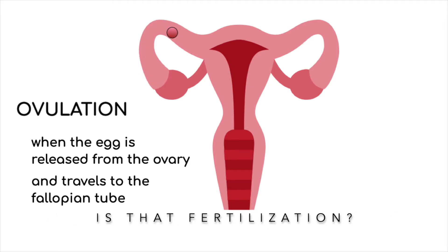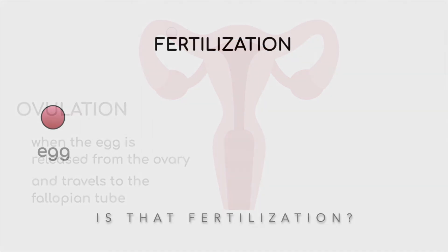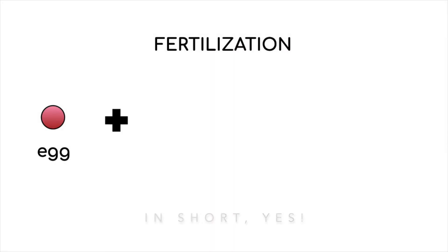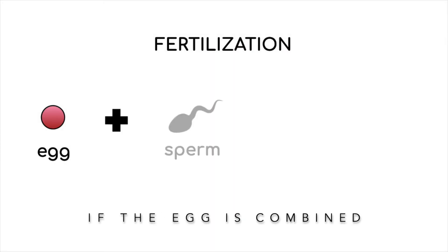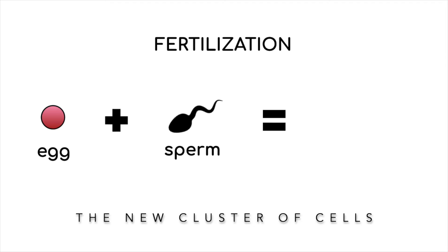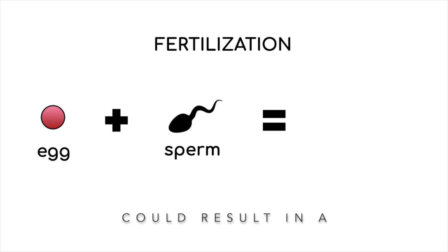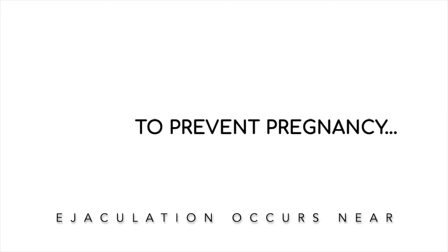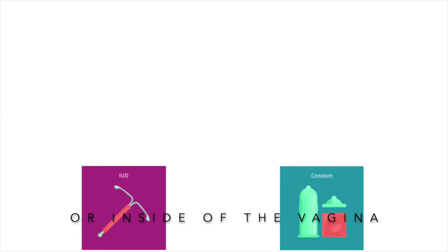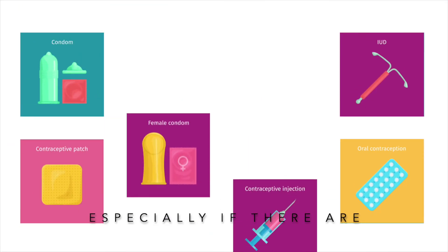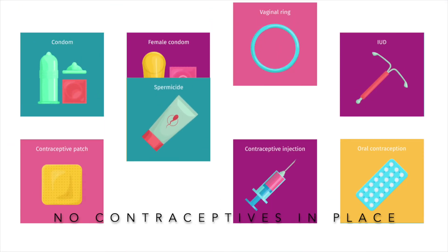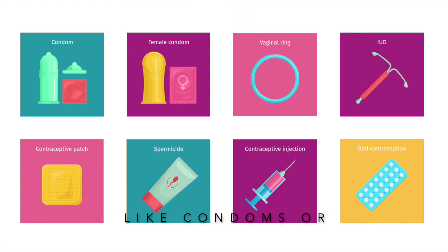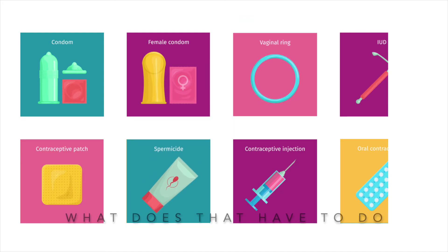Is that fertilization? In short, yes. If the egg is combined with a sperm cell, the new cluster of cells could result in a pregnancy. Sperm can travel to the fallopian tubes if ejaculation occurs near or inside of the vagina, especially if there are no contraceptives in place like condoms or birth control pills.